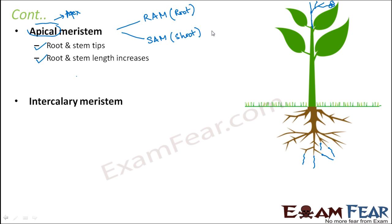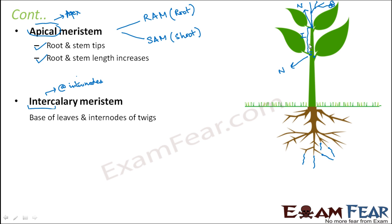Next is intercalary meristem. It is called intercalary because it is present at the internodes. Nodes are points from where leaves are formed, while the region between two nodes is the internode. These meristems are present at the base of leaves and internodes of twigs — essentially the stem regions between the places at which leaves attach.